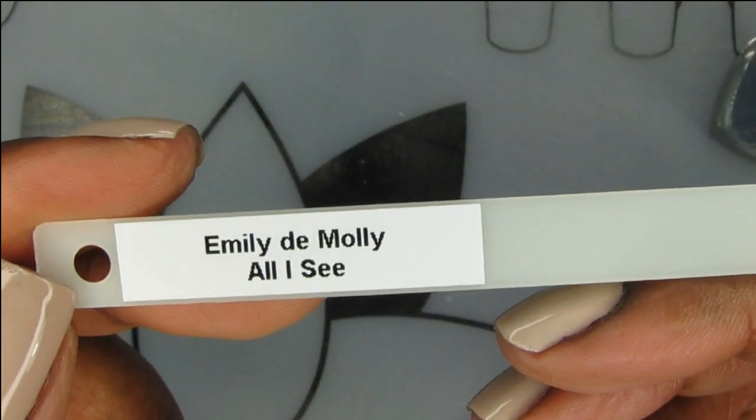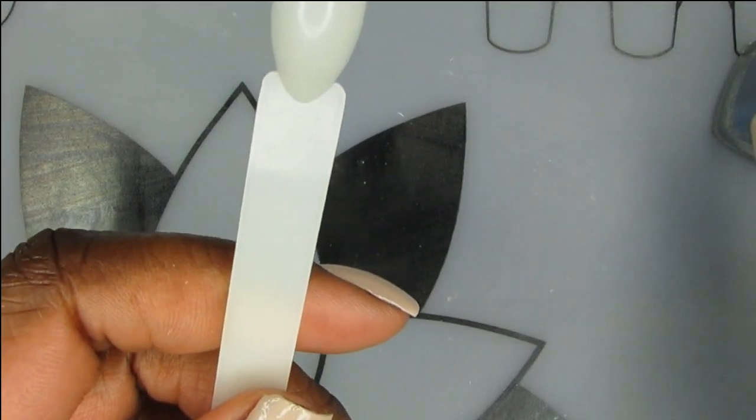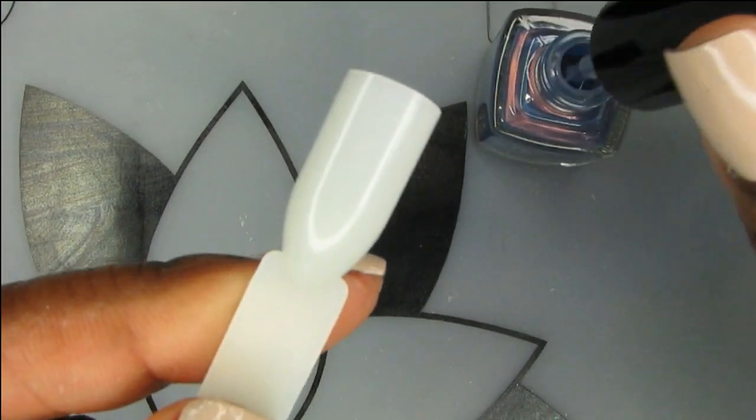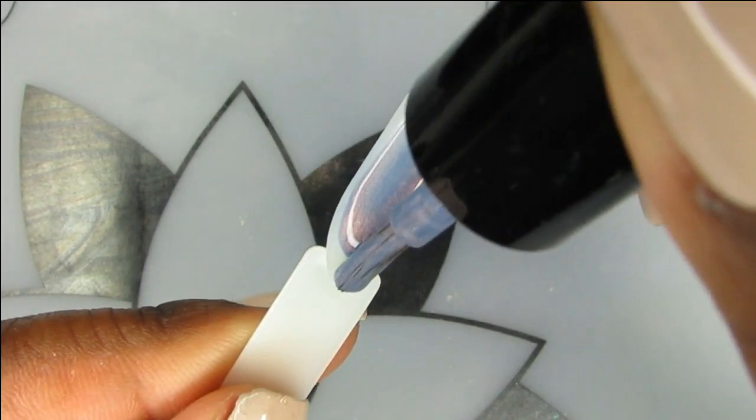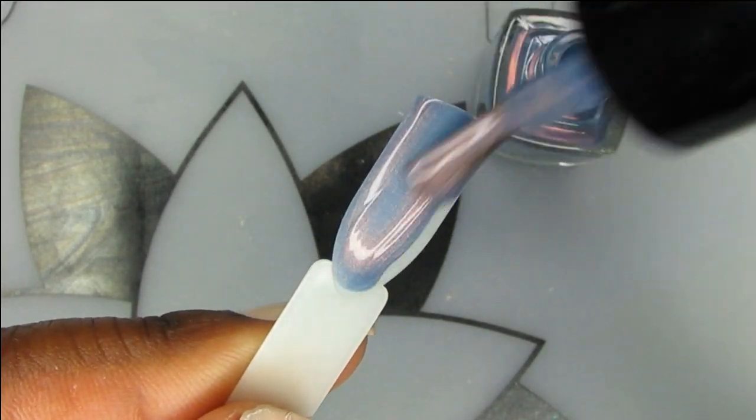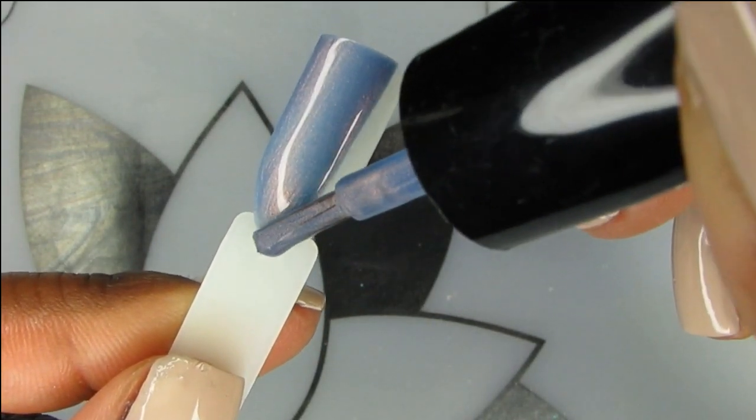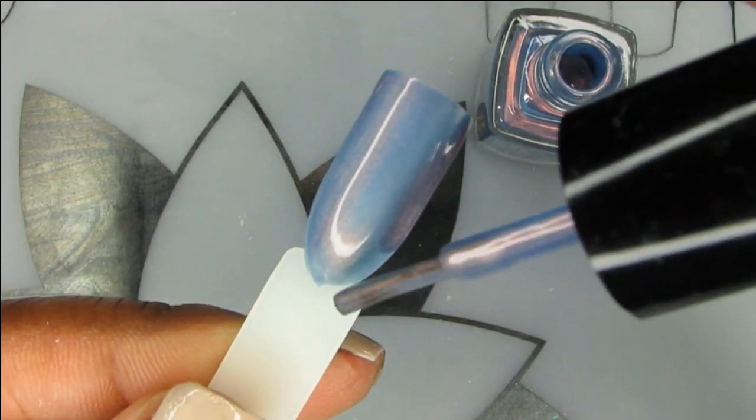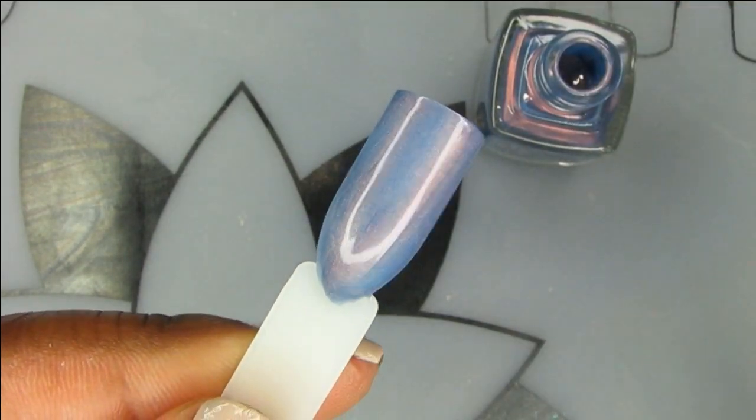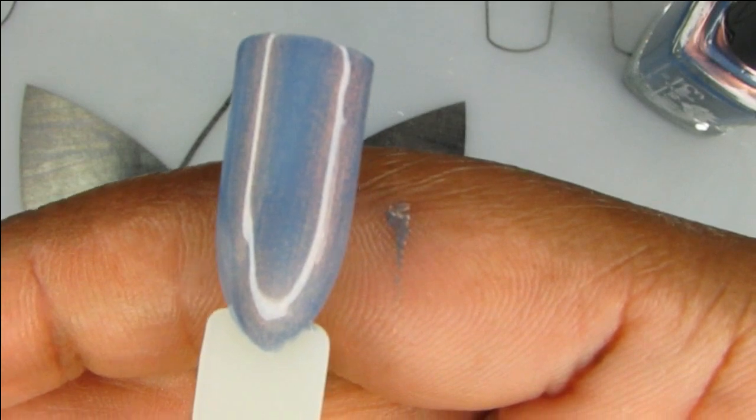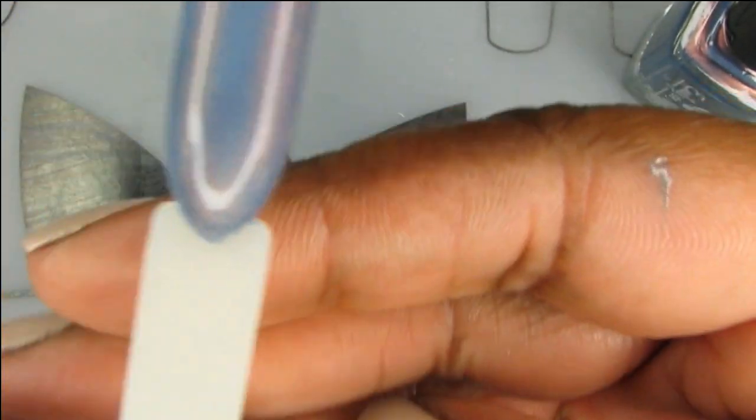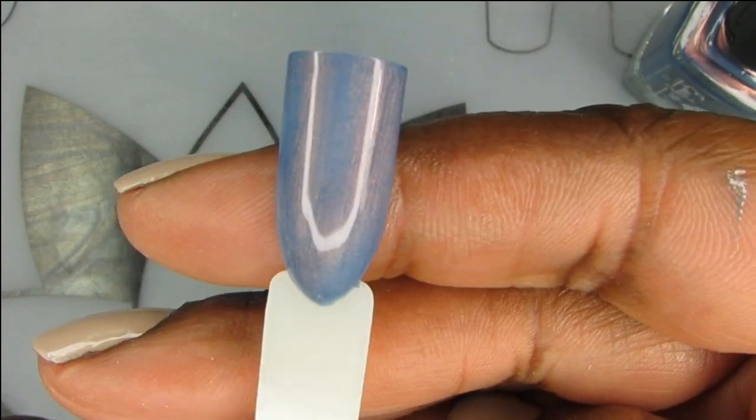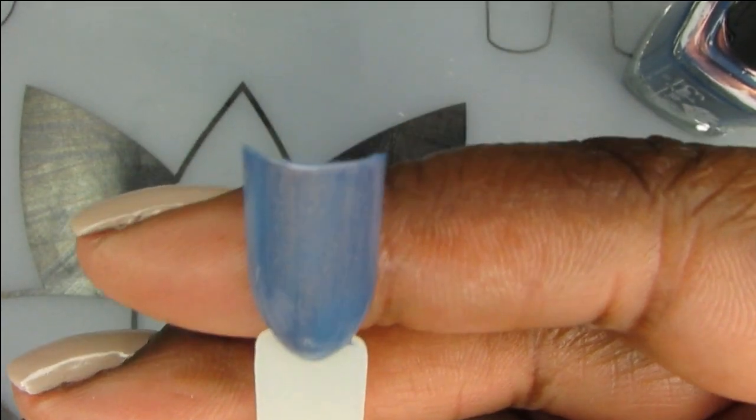All right. So we're going to start with All I See Now. This is described as a steel blue base with a copper overlay. Okay. I'm going to try not to make a mess like I normally do. I know this is a swatch stick, but this is so smooth. Gosh, that's pretty. And of course I'm going to dirty myself, but yeah, this is so pretty. Formula is so smooth. So far, my experience has been very, very good with Emily de Molly.